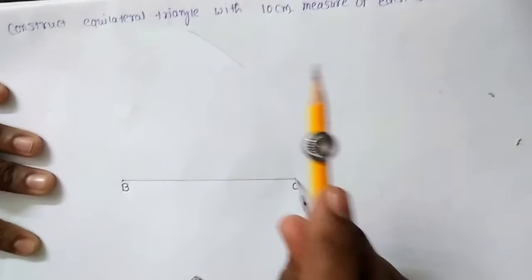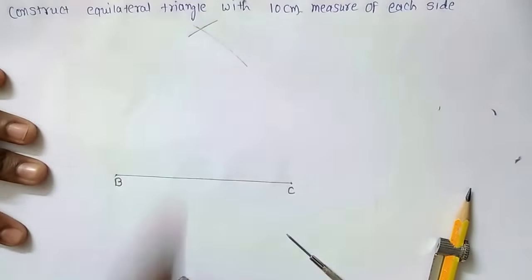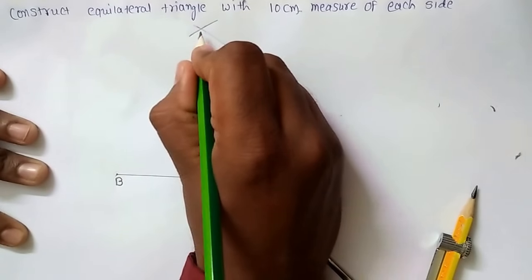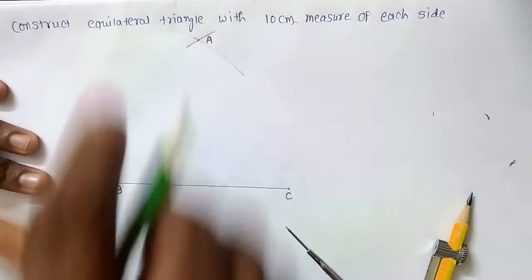By keeping same measure, I will keep the point on C and again draw the arc. So you can see that both the arcs are intersecting each other at this specific point. I will give the name of that point, point A.